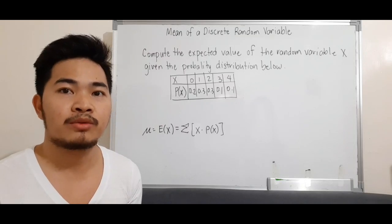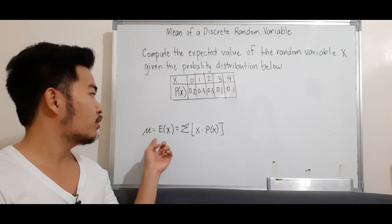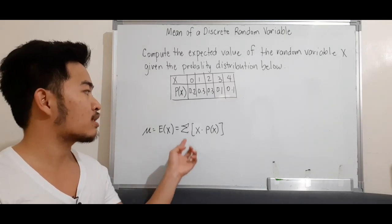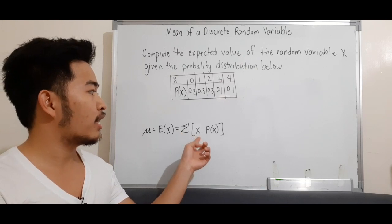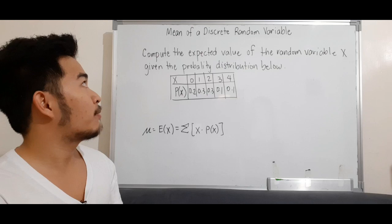The mean or expected value of a discrete random variable is given by the formula mu or E(x), which equals the summation of x times the probability of x. So let's have an example.